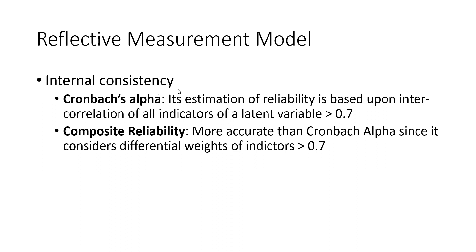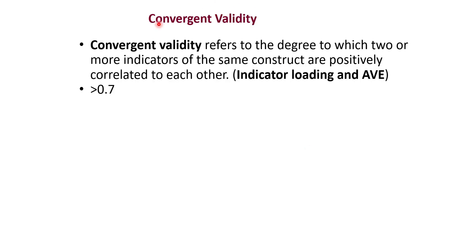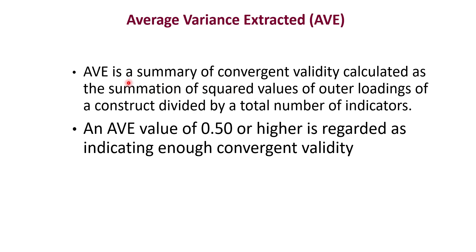Let's repeat the summary of internal consistency reliability. We measure it by two stats: Cronbach's alpha, where estimation of reliability is based on inter-correlation of all indicators of latent variables and should be greater than 0.7; and composite reliability, which considers differential weights of indicators and should also be greater than 0.7. Then we have convergent validity — it refers to the degree to which two or more indicators of the same construct are positively correlated. Indicator loadings should be greater than 0.7 (or 0.4 minimum) and AVE should be greater than 0.5, meaning we have sufficient convergent validity.